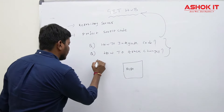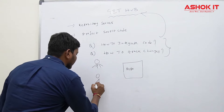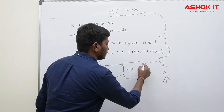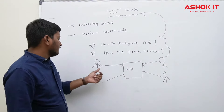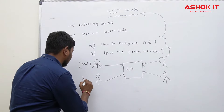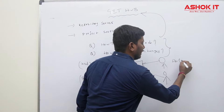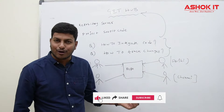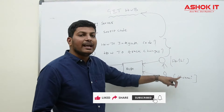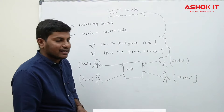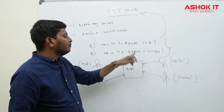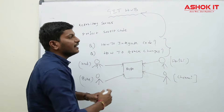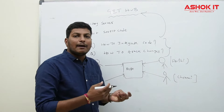By using GitHub we can create one repository in a central location. For our project, multiple developers are available working from different locations. All these developers can connect to a single repository and perform their operations — this is collaborative work. For example, developers working in Hyderabad, Pune, Delhi, and Chennai can all integrate their code at one place using a source code repository.